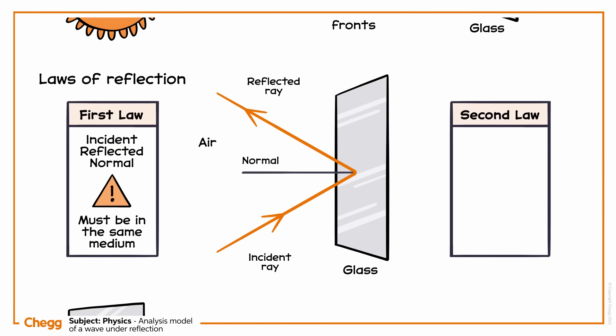The second law of reflection states that the angle of incidence, theta i, which is measured between the incident ray and the normal to the interface, is equal to the angle of reflection, theta r, which is measured between the reflected ray and the normal to the interface.